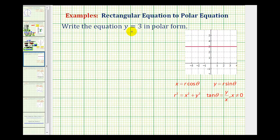We want to write the rectangular equation y equals 3 in polar form. Remember, the graph of this would be a horizontal line intersecting the y-axis at 3.